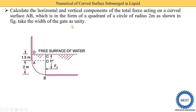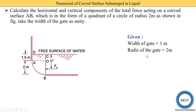Take the width of the gate as unity, meaning the width of the gate AB is one meter. Now we write down the given data: width of the gate is one meter, radius of the gate is two meters (distance O to A and O to B is two meters), and this curved surface is below the free surface. The distance between the curved surface and the free water surface is 1.5 meters. We need to find Fx and Fy.